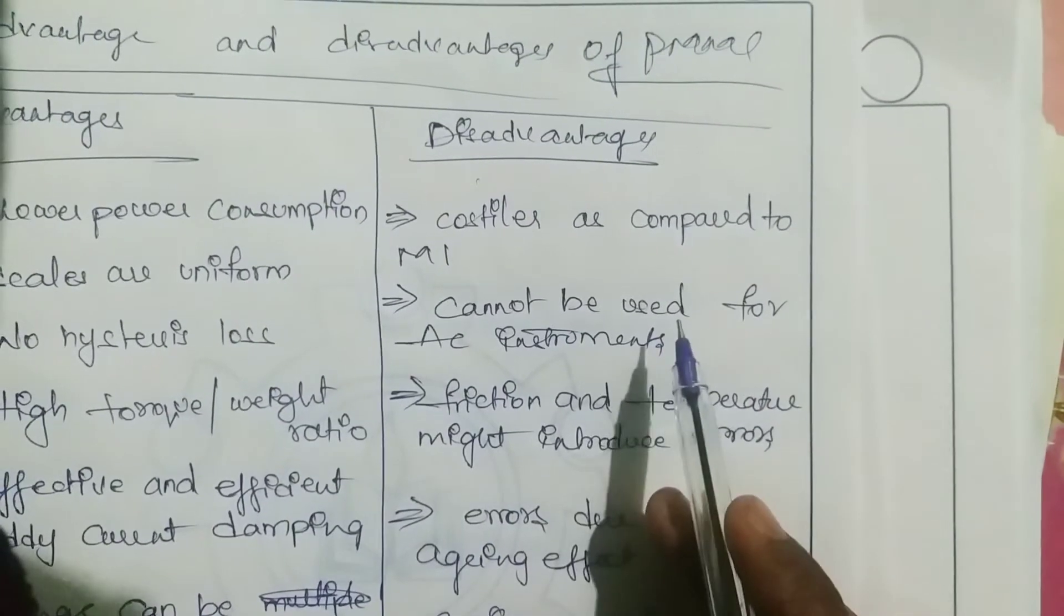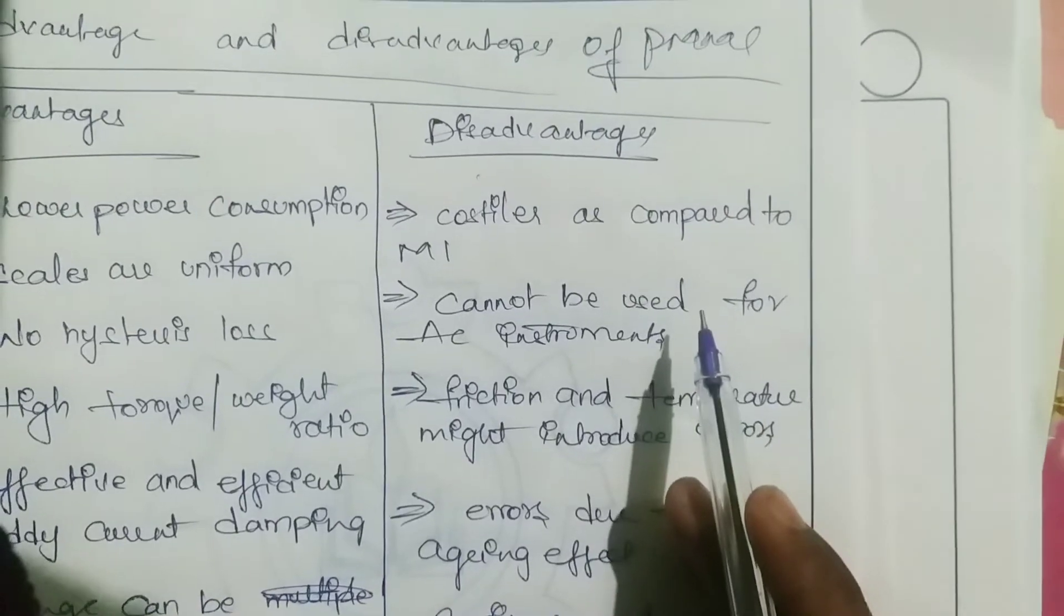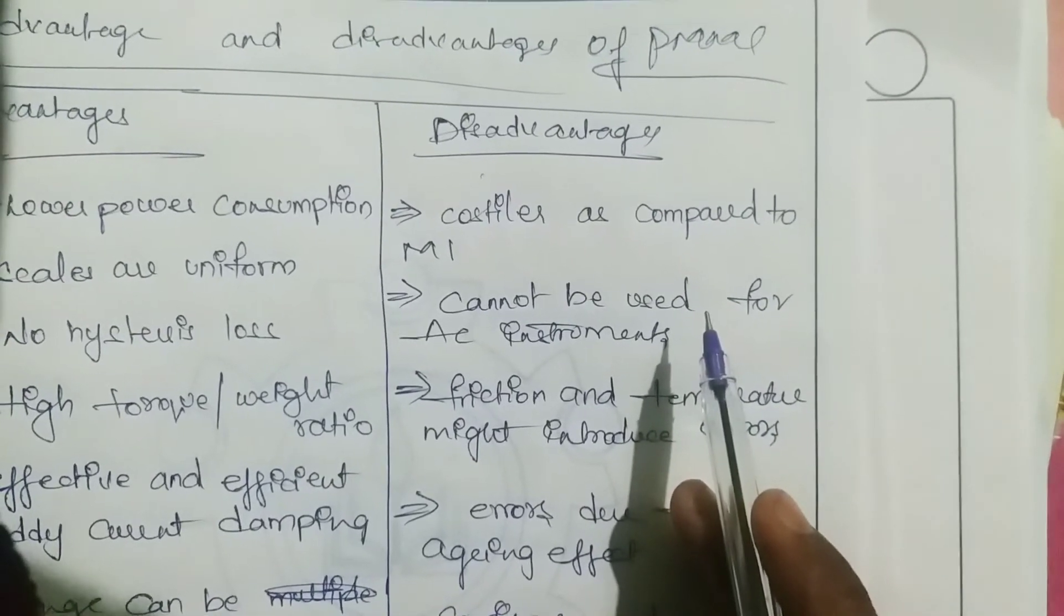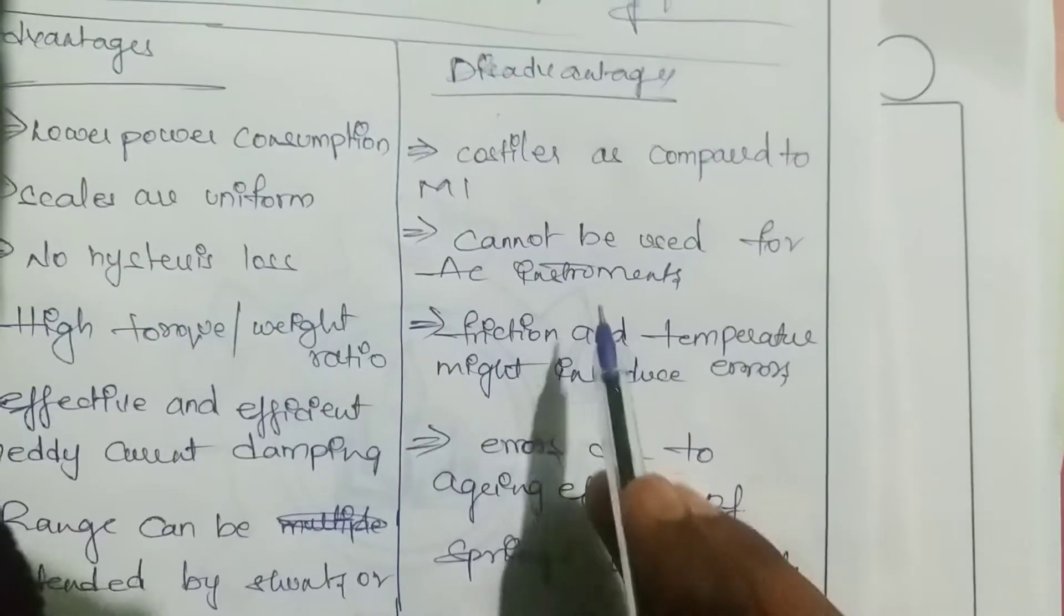The main disadvantage of PMMC instrument is it cannot be used for AC instruments to measure AC quantities.